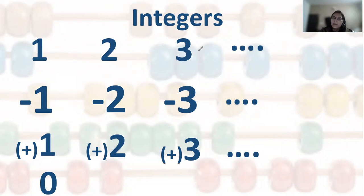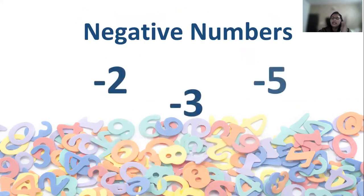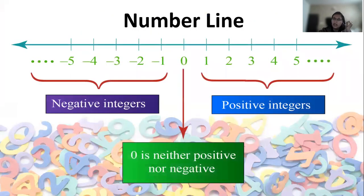Integers are positive numbers and negative numbers. You can ask them: is 2 plus or minus? Is 3 plus? Then summarize. Ask them as many questions as possible about positive and negative numbers, then explain about the number line.